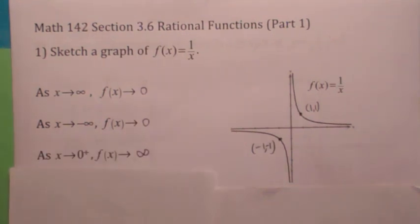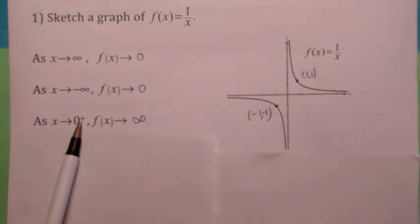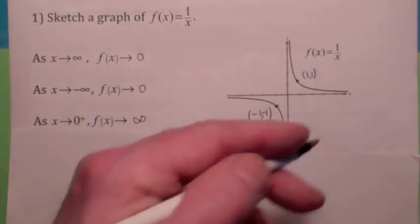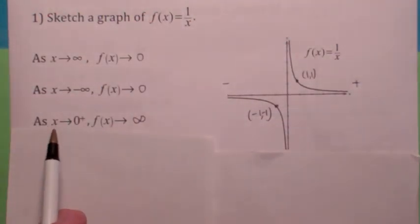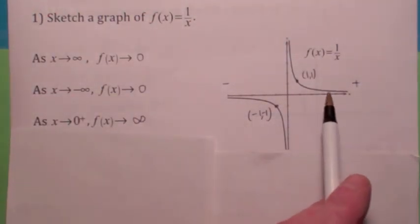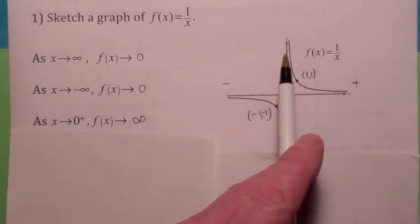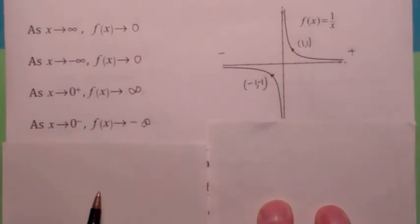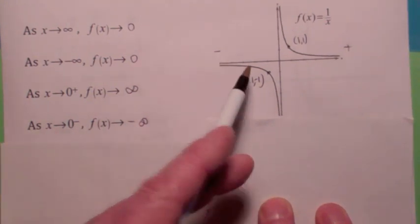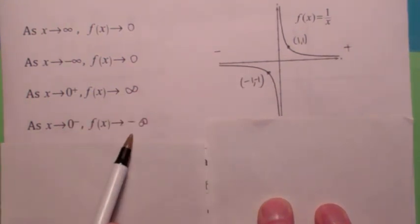Maybe you've not seen this notation yet. x goes to 0 plus — that means x is getting close to 0 from the right. Think of the positive numbers on the right, negative numbers on the left. So if x goes to 0 plus, you're coming to 0 from the positive side, and the function values are getting big, going to infinity. When x goes to 0 minus, that means you're coming from the left, and the y values are getting very negative — f of x goes to negative infinity.